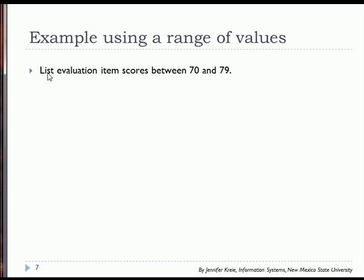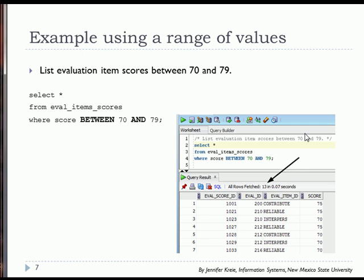Let's try this. We're going to list evaluation item scores between 70 and 79 from the student team database. I'm saying SELECT everything from eval item scores WHERE score BETWEEN 70 AND 79. Notice I don't have to list the column name twice. I list it once: score, between, value, and value. The output shows there are 13 evaluation item records with a score between 70 and 79.